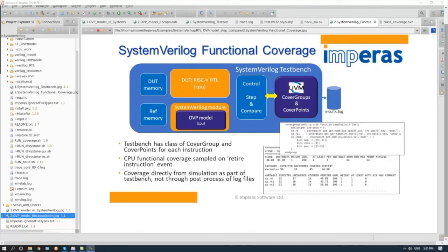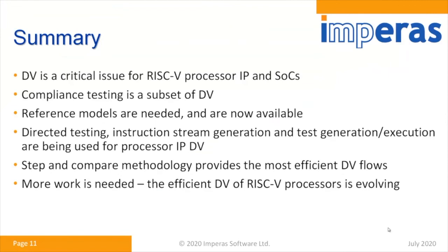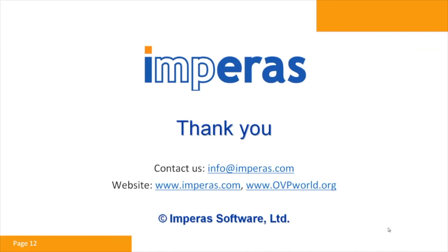In terms of what we have, we have an encapsulated model within the SystemVerilog domain that gives full visibility of everything going on inside, while still giving you the power of all the tools and debuggers from both the software and hardware perspective. Design verification is critical for RISC-V and compliance testing is just a subset of that. A key fundamental requirement is a reference model, and from Imperas they're available for directed testing, instruction stream generating verification, and anything you're doing for processor verification with RISC-V. We can use them in a SystemVerilog test bench with a step-and-compare methodology, which is the most efficient flow. These flows are evolving, but we have the technology available today. For more information, please email us at info@imperas.com or visit our website.